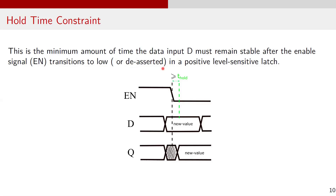For the hold time constraint, hold time is the minimum amount of time the data input D must be stable after the enable signal EN transitions to low, or gets de-asserted. Violating the hold time constraint can lead to incorrect data being latched or instability in the circuit. In the waveforms, T_hold is the hold time, and data must be stable for at least this duration after the enable signal is de-asserted.